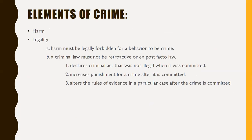A crime has not been committed unless all the following elements are present. First is harm. For a crime to occur, there must be an external consequence or harm. A mental or emotional state is not enough — thinking about committing a crime or being angry enough to commit one without acting on it is not a crime. The harm may be physical or verbal.